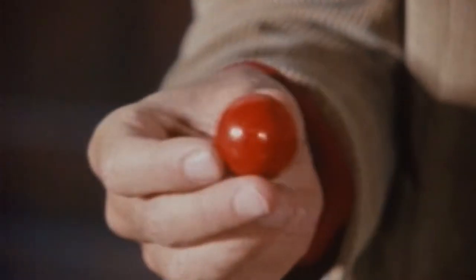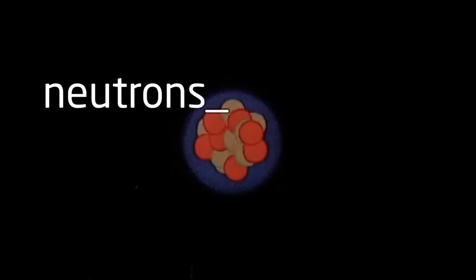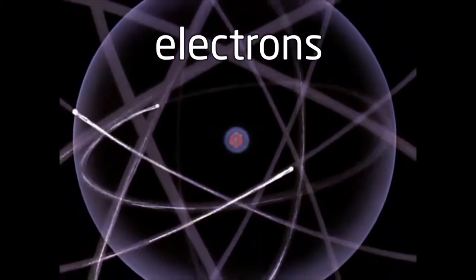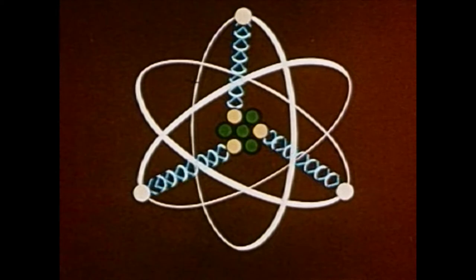A proton has a positive electrical charge. A neutron is electrically neutral. And an electron has an equal negative electrical charge.